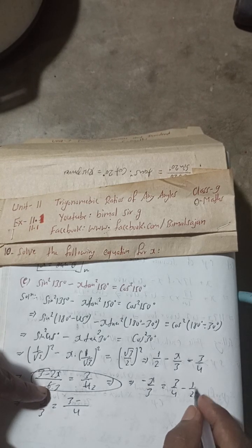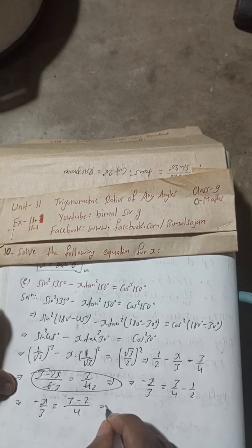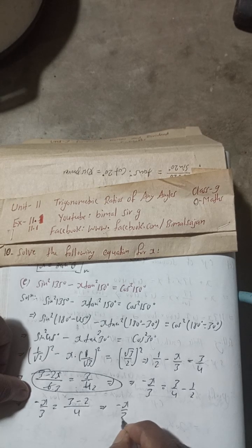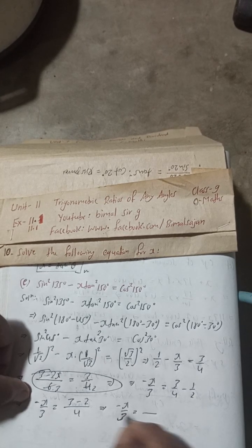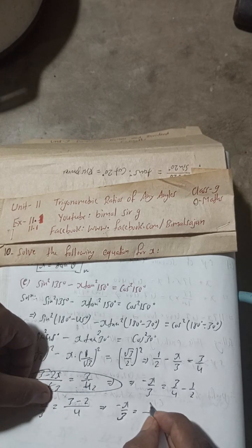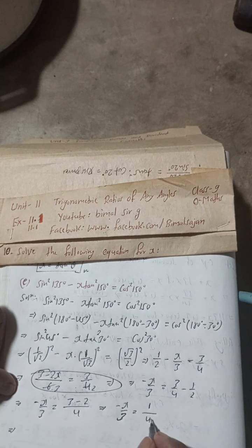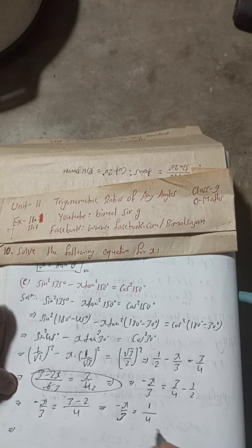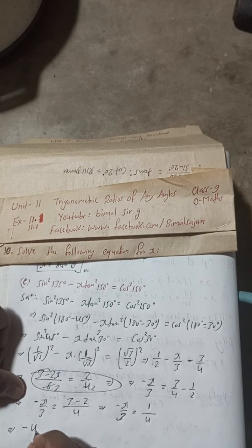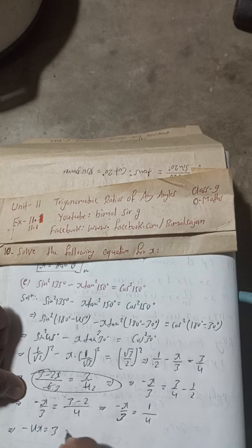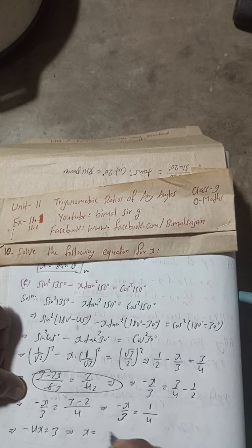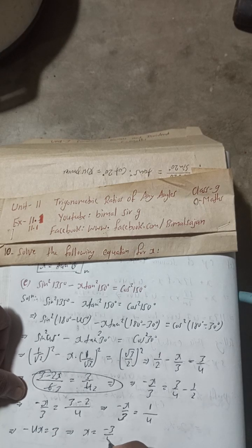So this implies -x/3 = (3 - 2)/4 = 1/4. This implies -4x = 3. So x = -3/4.